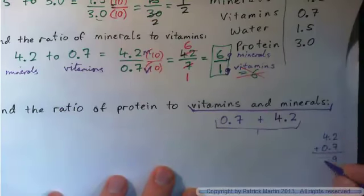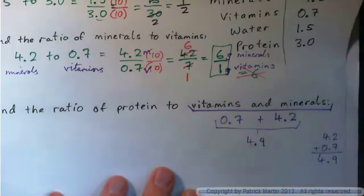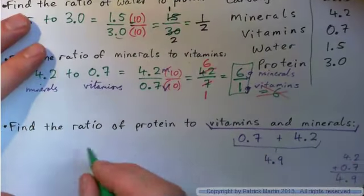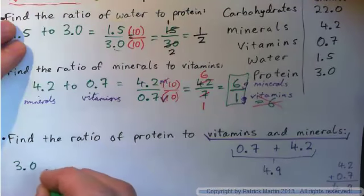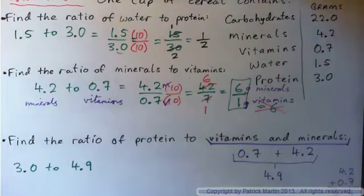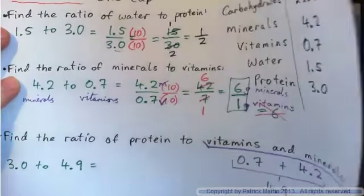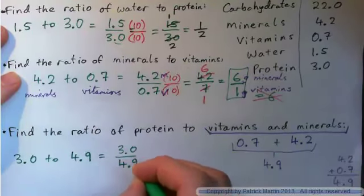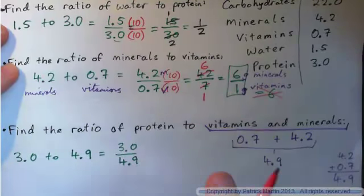2 and 7 is 9, 4 and 0 is 4. You get 4.9 grams of vitamins and minerals. So the ratio of protein to vitamins and minerals is protein is 3.0, so it's 3.0 to 4.9, which equals 3.0 over 4.9.